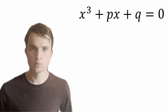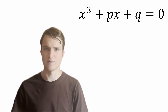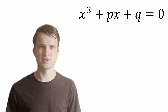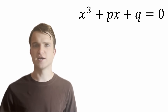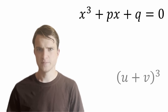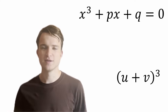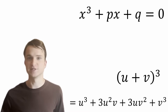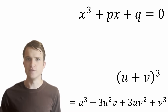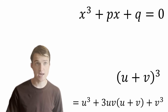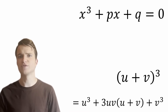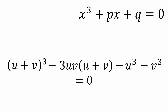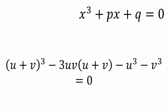A depressed cubic has this form. If we can solve this, we can solve any cubic whatsoever. The way to do this is easy to understand but very, very clever. Consider (u + v)³. This might seem like it comes out of nowhere, but it works out very nicely. Expanding, we get u³ + 3u²v + 3uv² + v³. We factor out 3uv from the middle two terms, then move everything to one side. If you haven't seen how this is related to our depressed cubic, maybe pause the video and see if you can spot the connection.